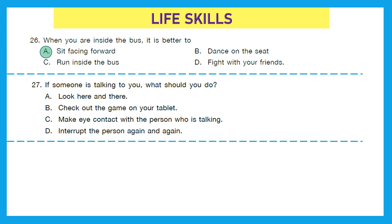Question 27: If someone is talking to you, what should you do? Look here and there? No. Check out a game on your tablet? No. Make eye contact with the person who is talking? That looks right. Interrupt the person again and again? Absolutely not. So the right answer is option C: make eye contact with the person who is talking.